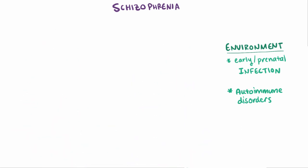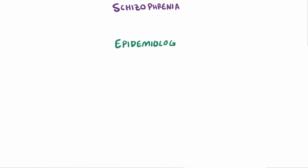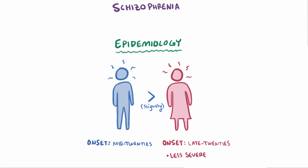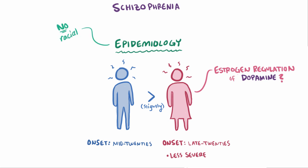Another important set of clues involves the epidemiology. Schizophrenia seems to happen slightly more in men than in women, with onset in the mid-twenties for men but late twenties for women, and the clinical signs are often less severe in women. Some studies suggest this difference might be due to estrogen regulation of dopamine systems. There doesn't however seem to be any difference among race.